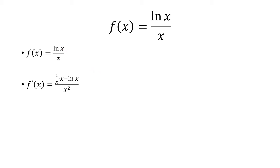which means take the derivative of natural log of x, which is 1 over x, times the bottom, minus the derivative of the bottom is 1, times ln of x, all over x squared.